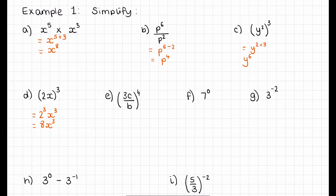Example E works the same way — everything has the power of 4 including the 3, giving 3 to the power of 4 times C to the power of 4 over B to the power of 4, which simplifies to 81C to the power of 4 over B to the power of 4. Example F: 7 to the power of 0 — remember, anything to the power of 0 is just 1. And then example G: 3 to the power of negative 2 is 1 over 3 squared. Just make a fraction, take the negative away, which we can then write as 1 over 9.